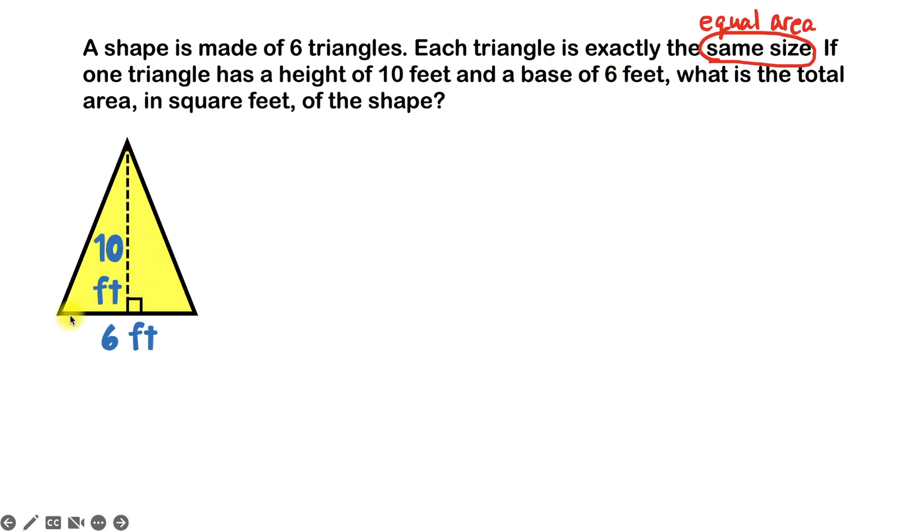So now that we have the base and height for one triangle, we can find the area of that triangle. But remember, not all area formulas are the same, so we have to make sure we start off with the right formula. And since we have a triangle, the formula is base times height divided by two.